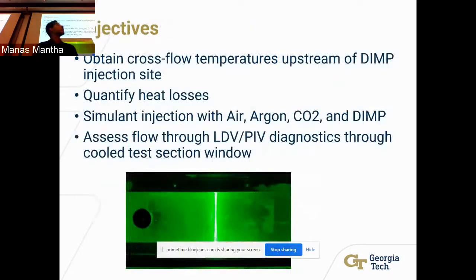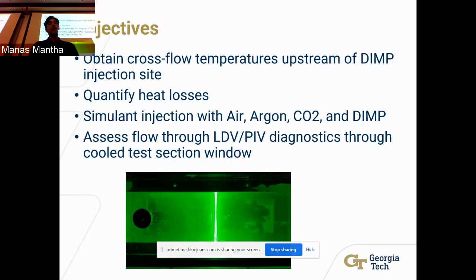Our objectives are to obtain the cross-flow temperature upstream of the DIMP injection site and to quantify heat losses throughout the test section and rig. We want to simulate injection for a variety of different gases before using DIMP — such as air, argon, and carbon dioxide — just to make sure the experiment works, the vitiator works, and all components of the test rig work before we use the more expensive and slightly more dangerous DIMP compound.